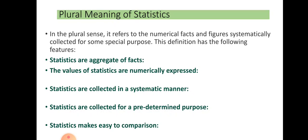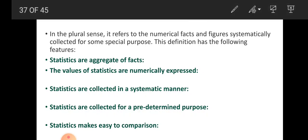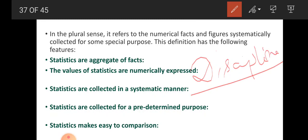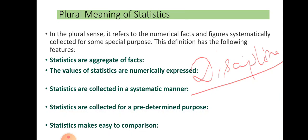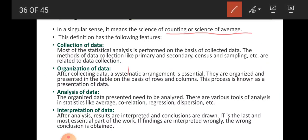In plural sense, the values of statistics are numerically expressed, collected in a systematic manner, collected for a predetermined purpose, and they make comparison easy. So in plural sense, statistics is not only a process but also a kind of discipline and a science. In singular sense, it is a process.